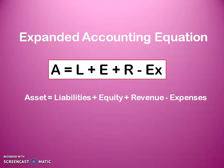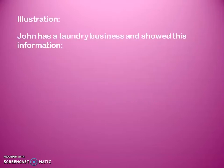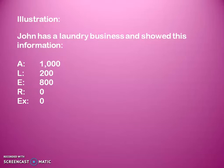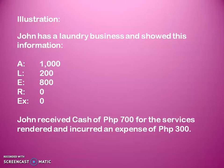So this is the expanded accounting equation and we will learn about this through an illustration. For example, John has a laundry business and showed this information. John has total assets of P1,000, liabilities of P200, equity of P800, and revenue and expense both zero. So in the end of the month, John received cash of P700 for the services rendered and incurred an expense of P300. In this statement, there are two transactions: the first is John received cash for the services rendered, and the second is John incurred an expense of P300.